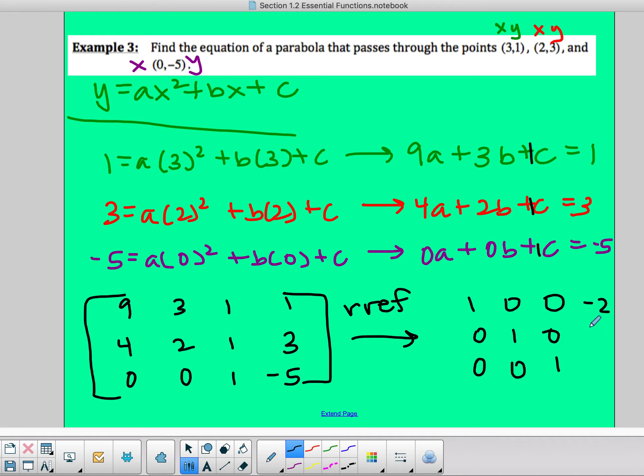eight, negative five. So these are my solutions to my matrix. So the first one, this is our A value. Then the next one, this is our B value. And then lastly, this is our C value.